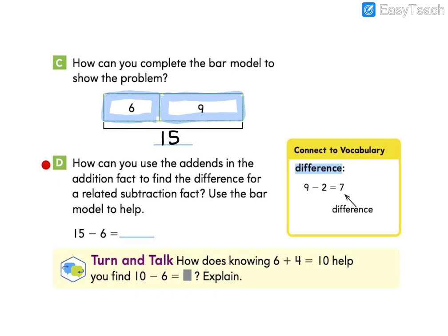Letter D says, how can you use the addends in the addition fact to find the difference for a related subtraction fact? Use the bar model to help. Let's remember our vocabulary. See here, our difference. When we take two away from nine, the difference is seven. That's the answer to our subtraction equation.